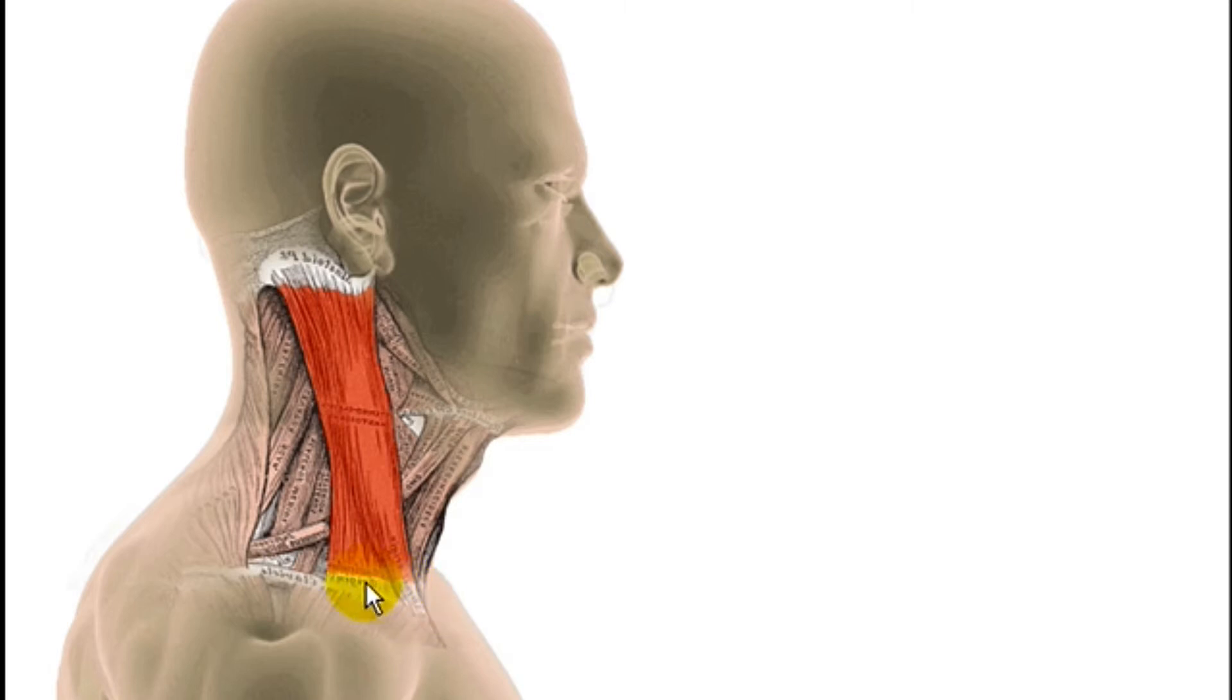The second runs and attaches down into the clavicle and it runs underneath the sternal division. Trigger points can occur in both divisions and we'll look firstly at the sternal division which is the more superficial.